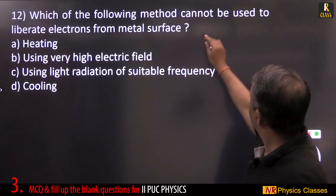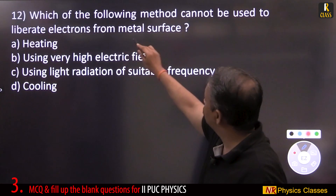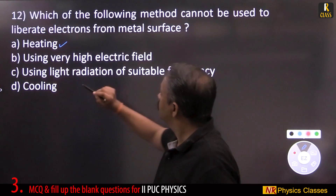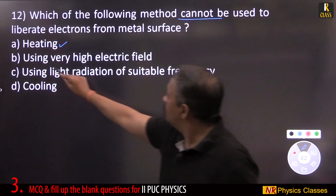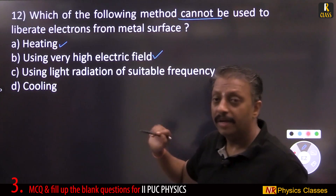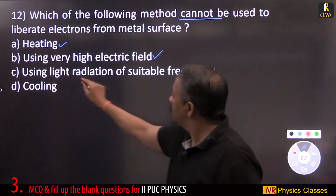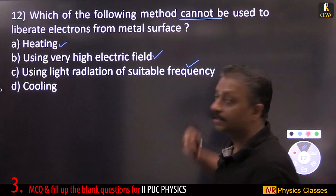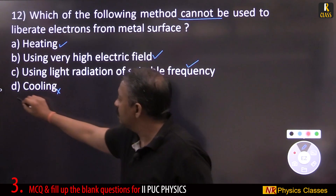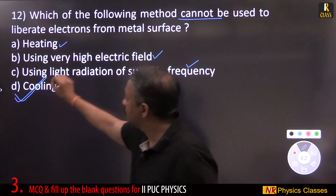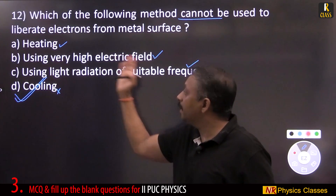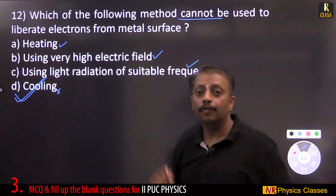Which method cannot be used to liberate electrons from a metal surface? Heating causes thermionic emission; using a very high electric field causes field emission; using light radiation of suitable frequency causes photoelectric emission. Cooling cannot produce electron emission — therefore cooling is the answer. The other options correspond to thermionic, field, and photoelectric emission.